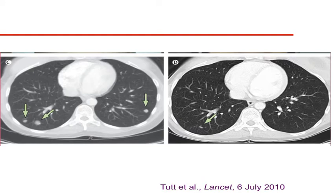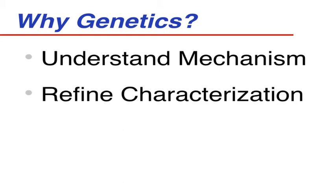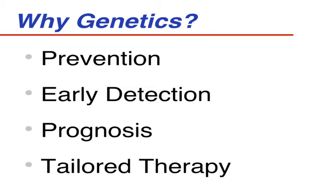I want to close by emphasizing that these results were driven by the genetics. Understanding the genetic mechanism — understanding what these genes do — has had an influence on how to target these tumors. By understanding mechanism and refining the characterization of the pathways, we've been able to rationally design drugs to help treat the tumors. We can use knowledge of breast cancer genetics to tailor early detection methods. Prevention through prophylactic mastectomy or oophorectomy does prevent breast cancer in BRCA1 and BRCA2 families. A lot of excitement in the last couple of years has been in tailored therapy. Thank you for your attention.